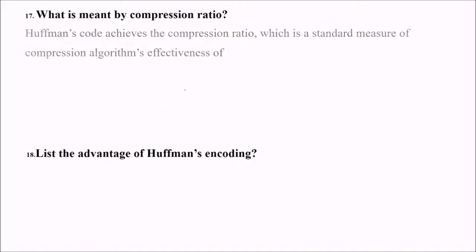What is meant by compression ratio? Huffman code achieves compression ratio, which is a standard measure of compression algorithm effectiveness. Say it was 3 earlier, it became 2.25. So 3 minus 2.25 by 3, the original value, into 100 becomes 25%. This is how we achieve the compression ratio.